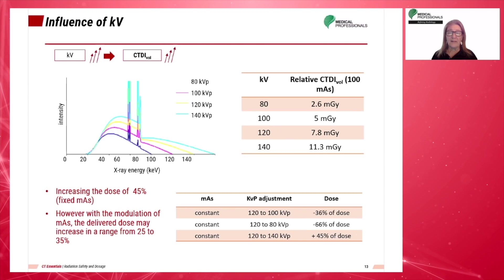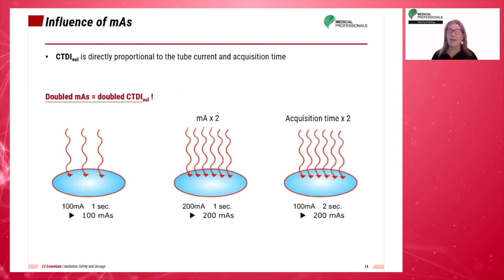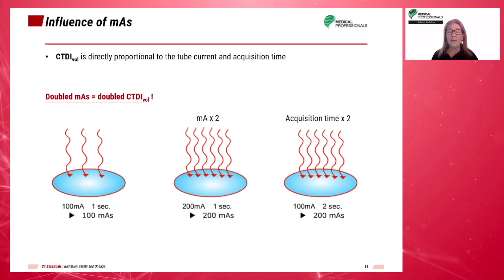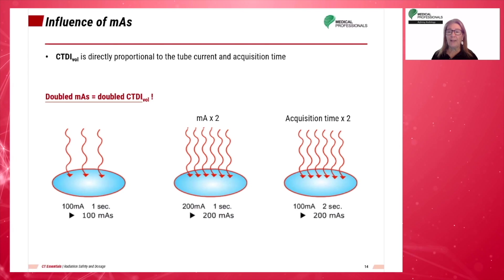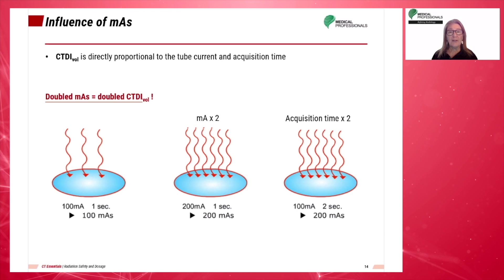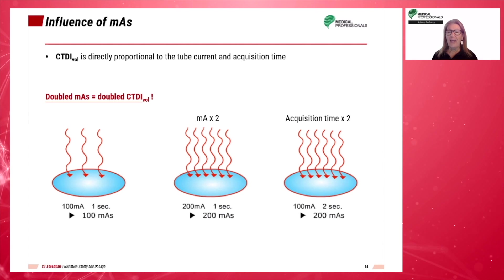MAS also has an effect on patient dose. It determines the total number of photons, and only the quantity of photons is affected by a change in MAS. Remember, longer scan times will require longer tube cooling and can cause an increase in patient motion, but an increase in scan rotation time will result in better resolution. Increasing MAS and KVP will improve the signal-to-noise ratio but also increase the dose to the patient. Doubling the MAS will result in an increase in the volume CTDI.